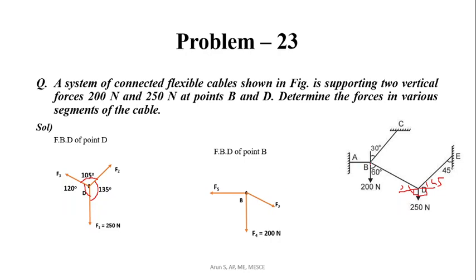Similarly, the BC segment force acts along BC; let this be force F6. The angle for the BC segment is 60 degrees and the angle for the AB segment is 30 degrees. We can now consider the equilibrium conditions at point D and point B to find the unknown forces.